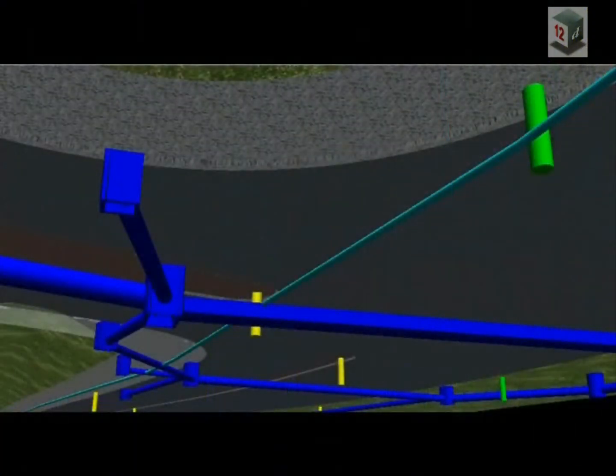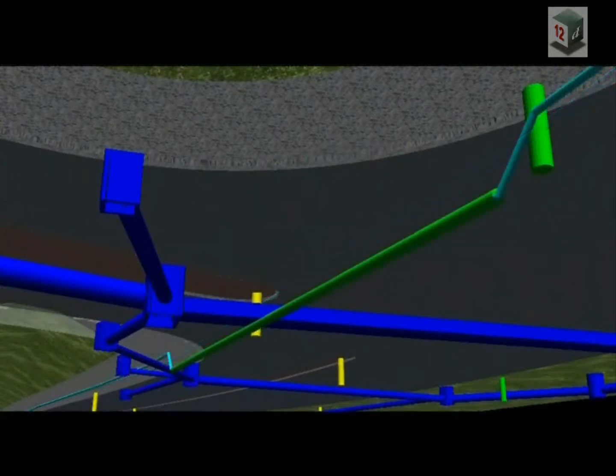In this example, on another project at Olsen Ave, the design water main conflicts with the proposed box culvert and through the other two design stormwater pipes. Once this was identified, a new design was done with added envelope going under the proposed box culvert.